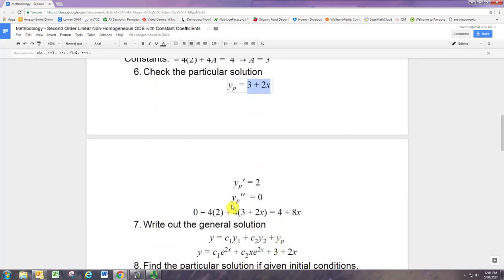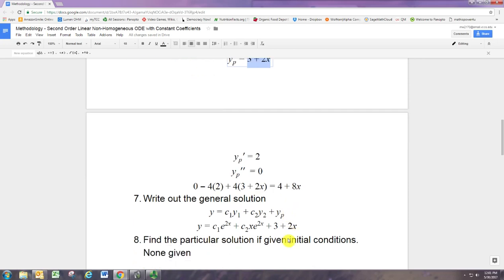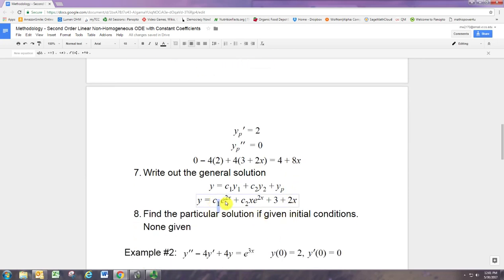You can check, take its derivatives, substitute them in, and you'll see that it does work out. So now the general solution includes the fundamental solution set, right, with those two solutions to the homogenous form, also adding on to that the particular solution. You could find specific values for C1 and C2 if you had initial conditions, but we don't. But we will in the next example.